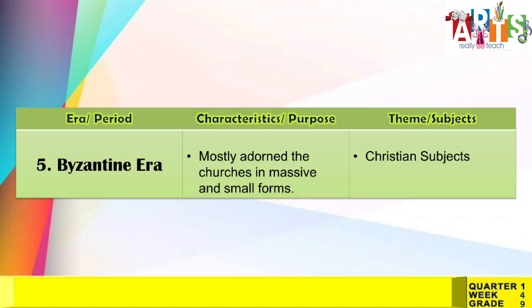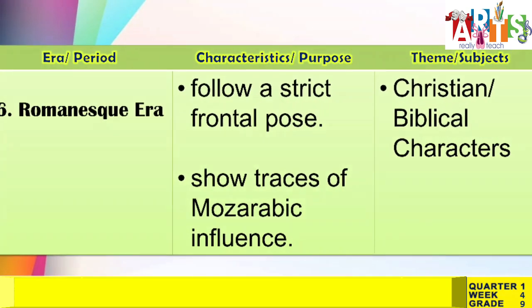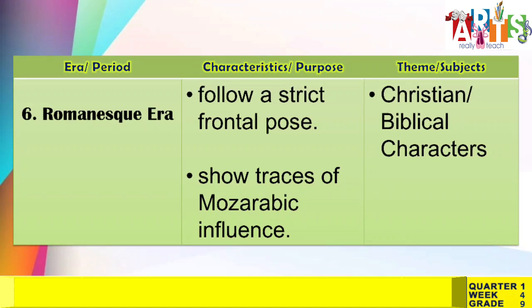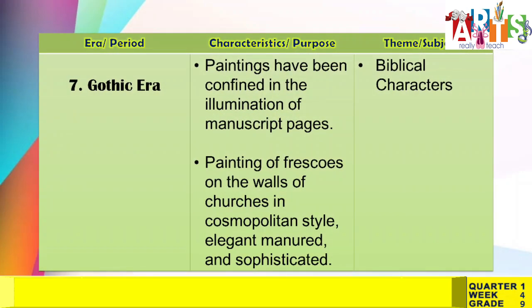Fifth, the Byzantine era: artworks mostly adorn churches in massive and small forms, with Christian subjects as the main theme. Sixth, the Romanesque era: characterized by a strict frontal pose, shows traces of Mozarabic influence, with Christian or Biblical characters as themes. And lastly, the Gothic era: paintings confined to the illumination of manuscript pages and frescoes on church walls in cosmopolitan style — elegant, mannered, and sophisticated — with Biblical characters as their theme.